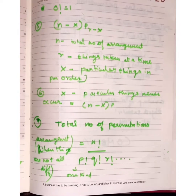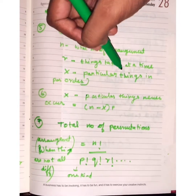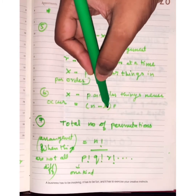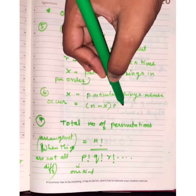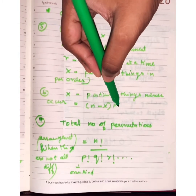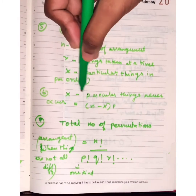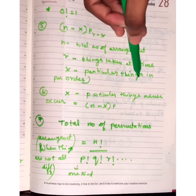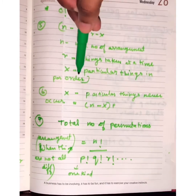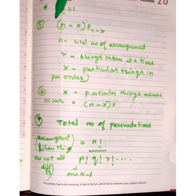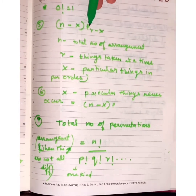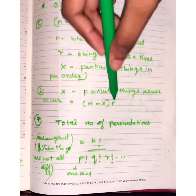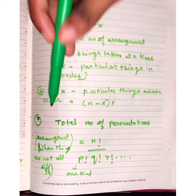A similar formula applies but with a small change: when x particular things never occur, the formula becomes (n−x)Pr. In contrast, when particular things must appear in a particular order, the formula is (n−x)P(r−x).